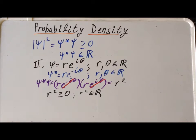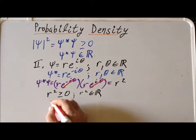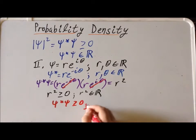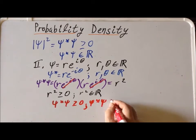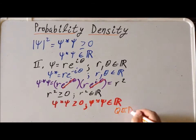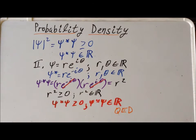Since r squared is just another way of writing psi star psi, this tells us right away that psi star psi — the probability density — is greater than or equal to zero, and it's a real number. That is exactly what we wanted to prove when we started out. So we were able to demonstrate this important fact two different ways, and the trick in each case was simply how we chose to write the form of the possibly complex wave function. Thank you very much for your attention. Have a good one.